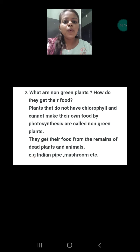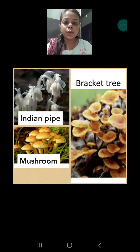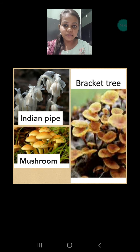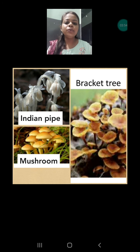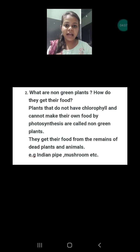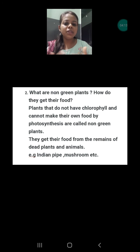Question number two is asking: what are non-green plants and how do they get their food? Non-green plants don't look green in color because they do not have chlorophyll. If they are not having chlorophyll, they cannot do photosynthesis, and hence they cannot make their own food. So how do they get their food? By other ways. In the case of non-green plants, they take nutrition from dead animals or plants. When plants and animals die and mix with the soil, they provide nutrition to the non-green plants.